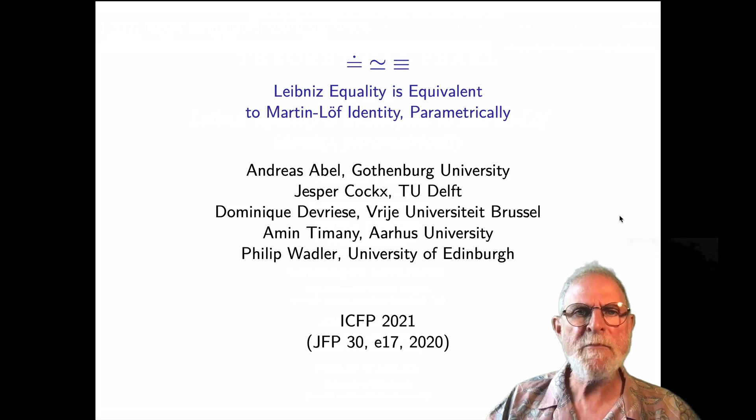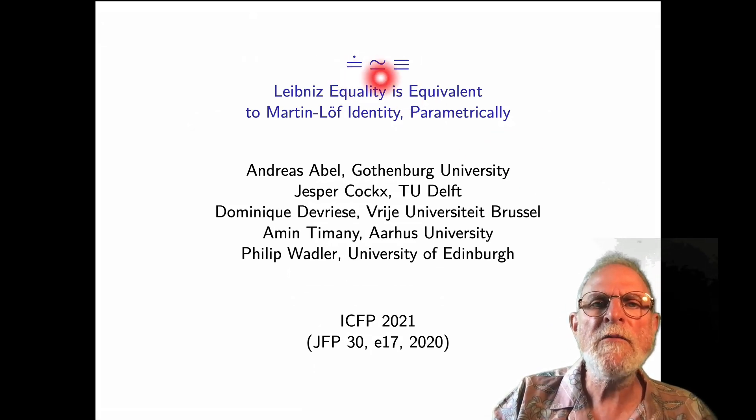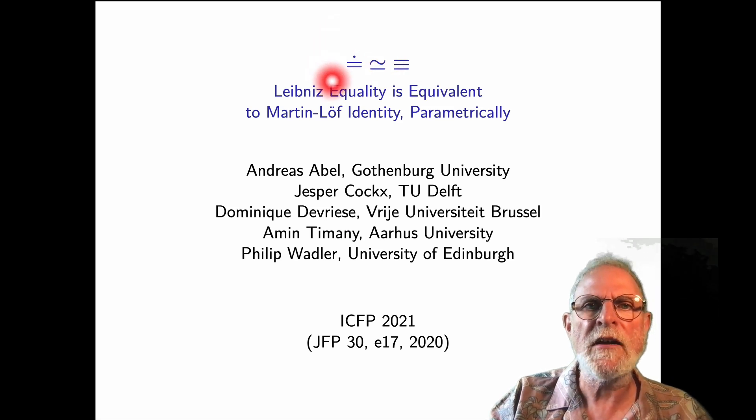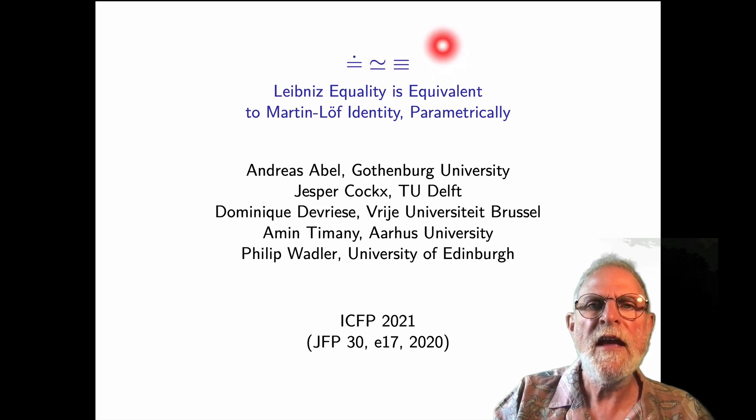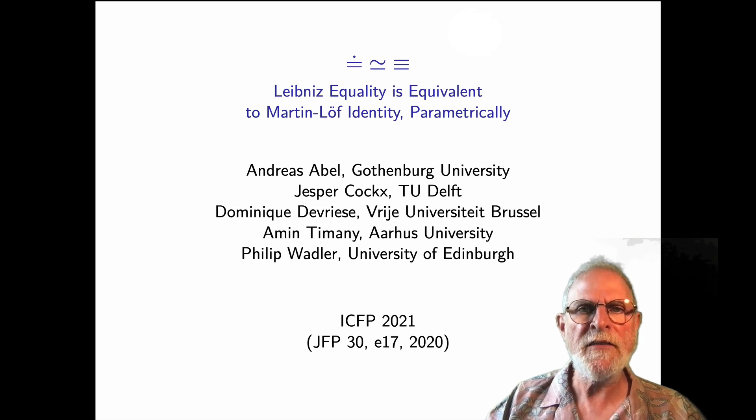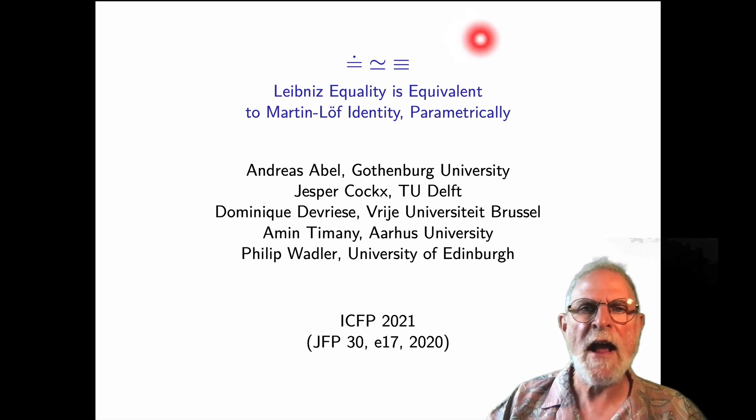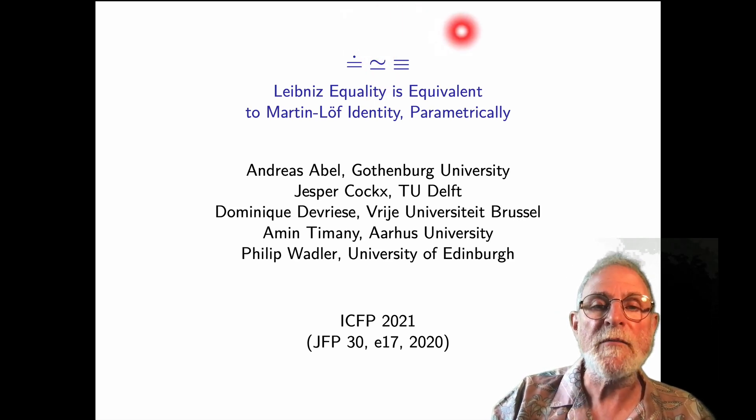This paper is a story about two equalities: Leibniz equality, which we're going to write as an equal sign with a dot over it, and Martin-Löf identity, which we're going to write as three parallel bars. It's well known that each of these implies the other, and that that's a retraction. But what's less well known is that that's actually an isomorphism.